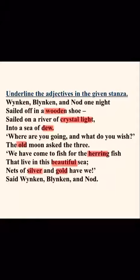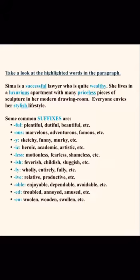Now, students, you might think silver and gold are nouns — and yes, they can be. But look at the sentence properly: 'Nets of silver and gold have we.' Here, silver and gold are describing the nets — the nets which Winken, Blinken, and Nod have brought are made of silver and gold. So in this context, silver and gold are adjectives.